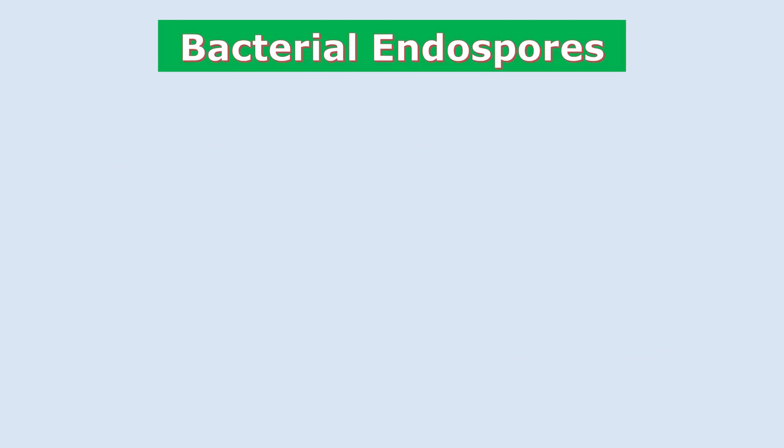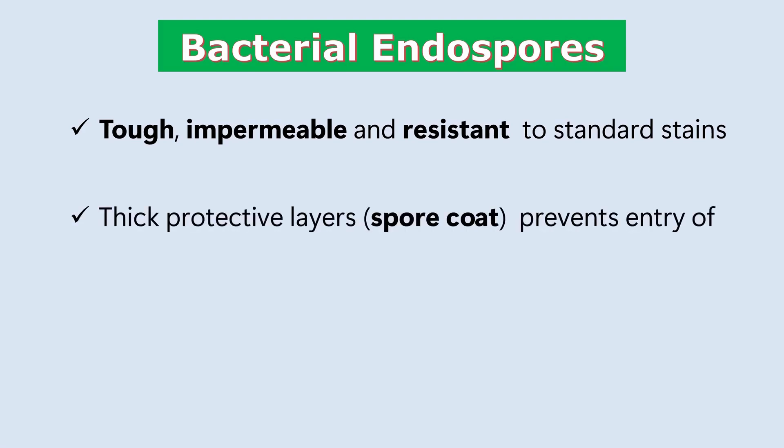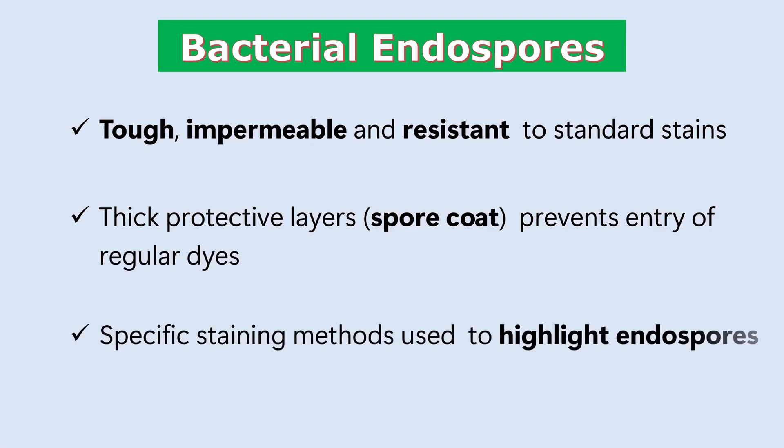Bacterial endospores are highly tough, impermeable and resistant to standard staining techniques. This resistance is due to their thick protective layers, especially the spore coat, which prevents the entry of regular dyes. Because of this, we use specific staining methods to highlight the endospores and differentiate them from vegetative cells.